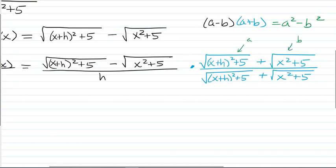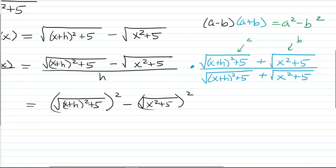So in the numerator, we're going to get the first term squared minus the second term squared. So that looks like the square root of x plus h squared plus 5 squared minus the square root of x squared plus 5 squared. Now in the denominator, I'm just going to leave it as h times that whole quantity because again, my hope is that I get that h in the denominator, that factor to cancel out.